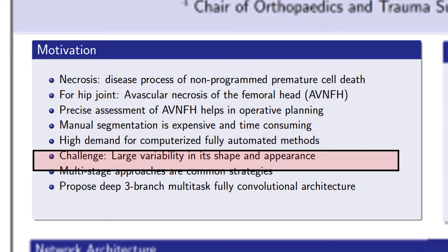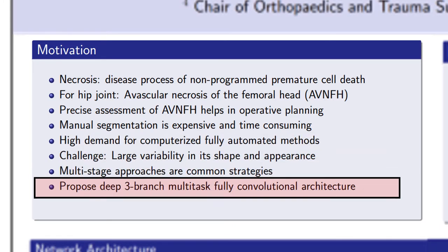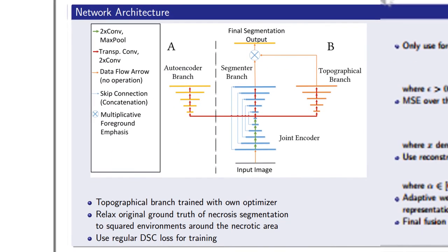For this task we proposed a three-branch multi-task fully convolutional network architecture to solve this problem. Our architecture consists of a joint convolutional encoder that generates a common latent representation for different objectives.